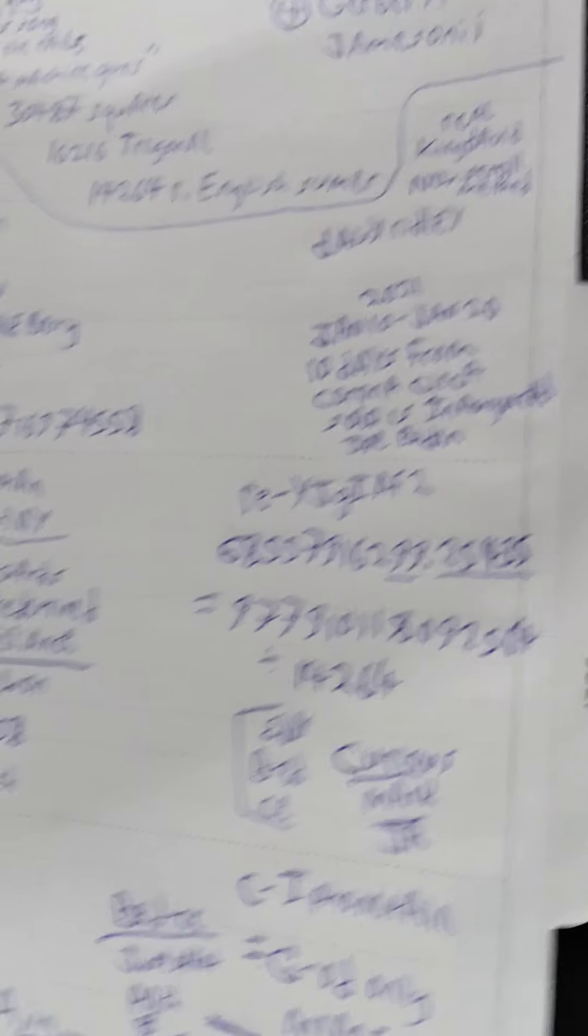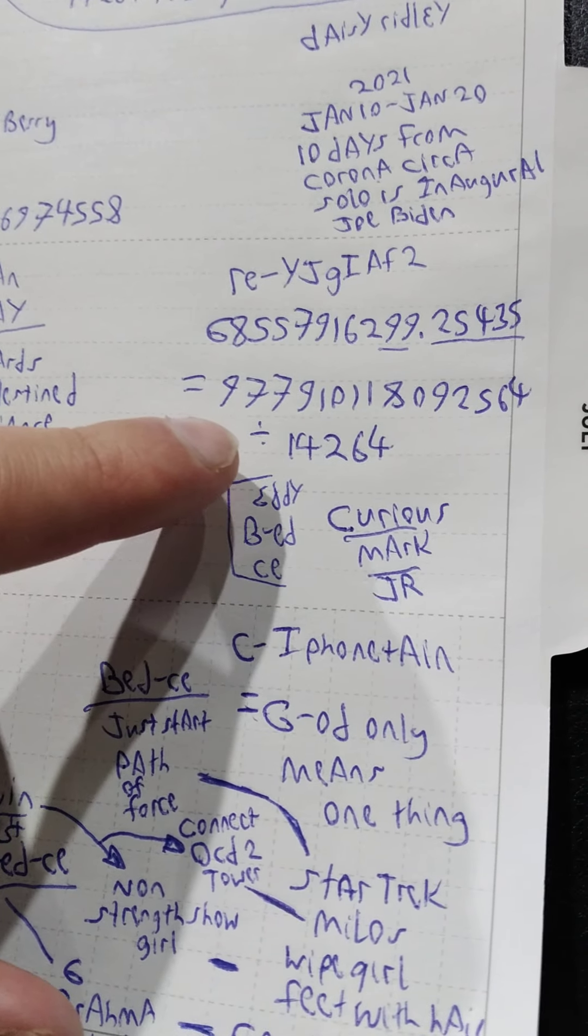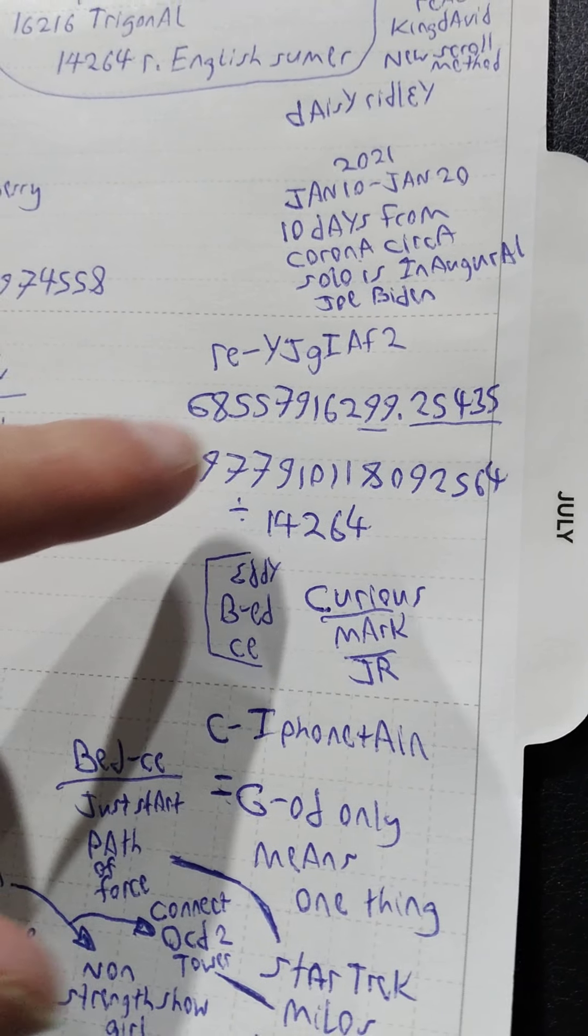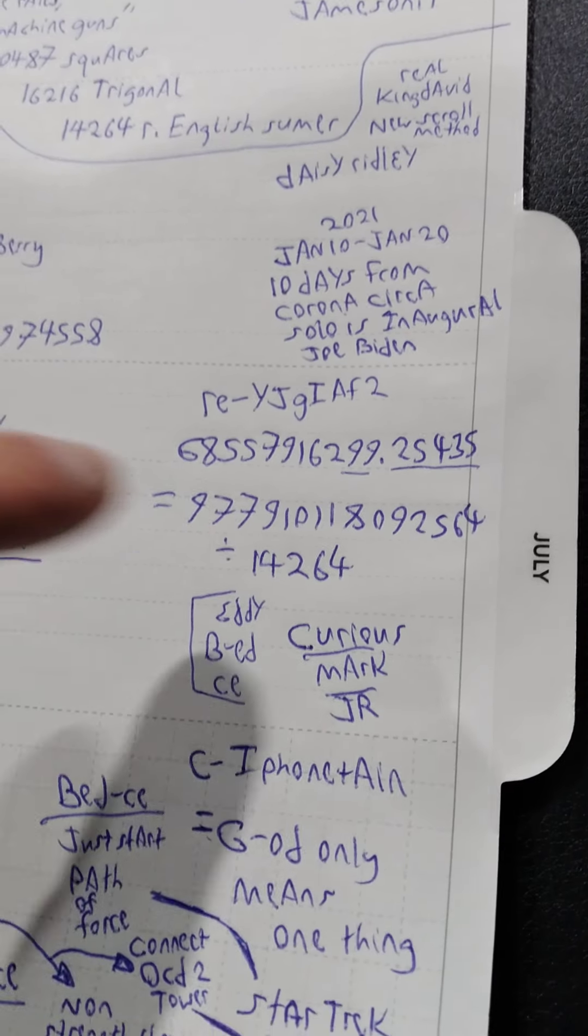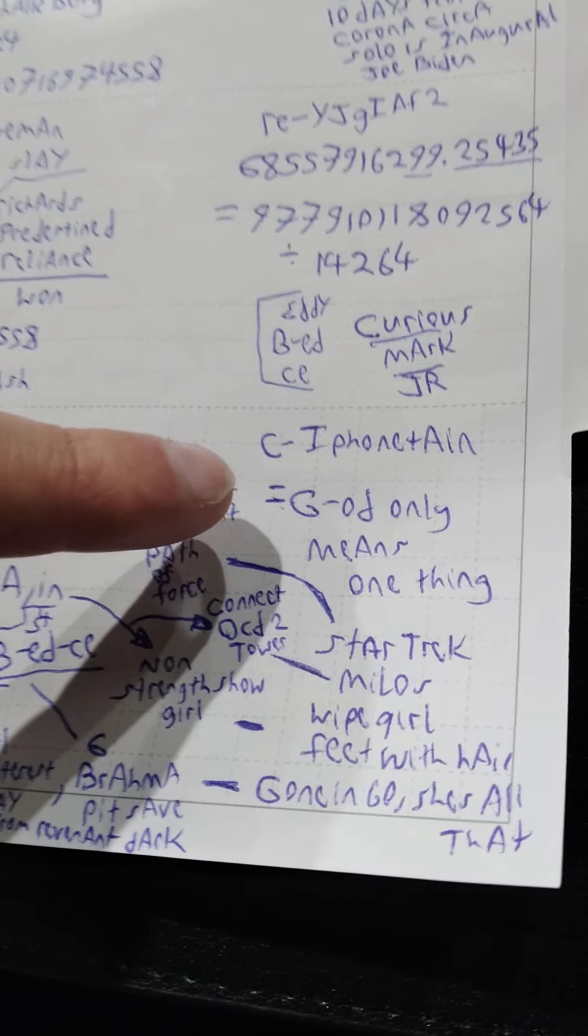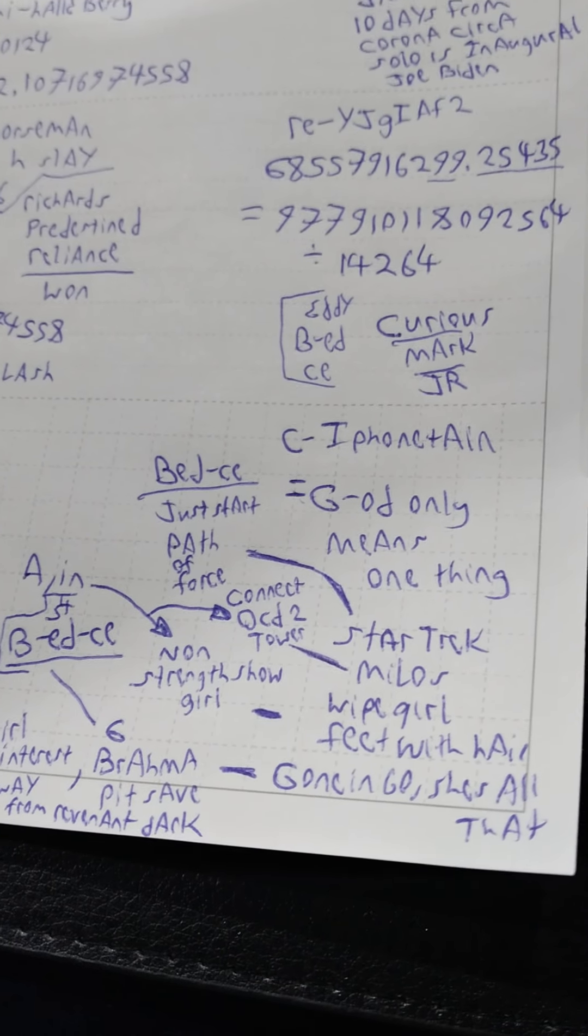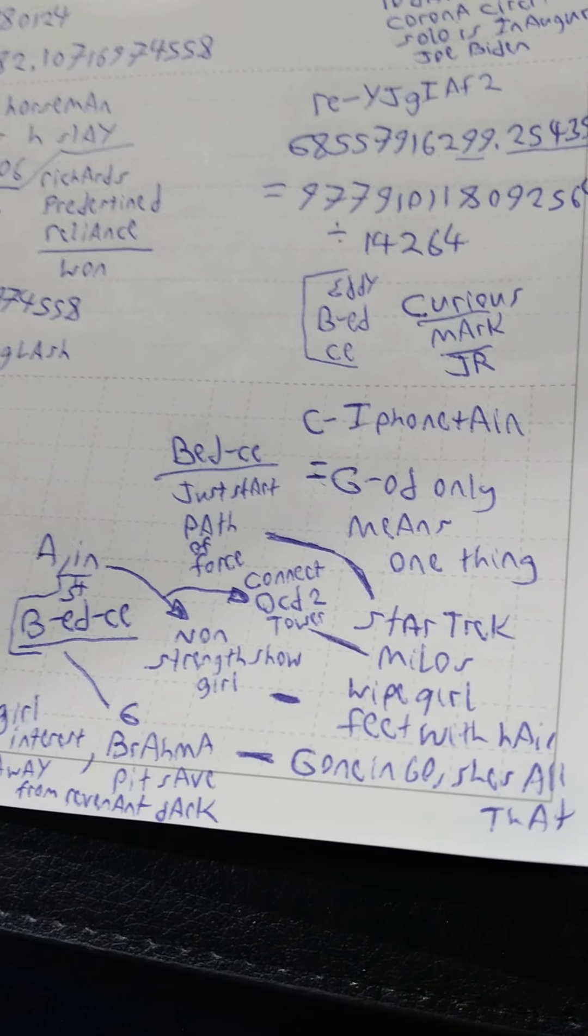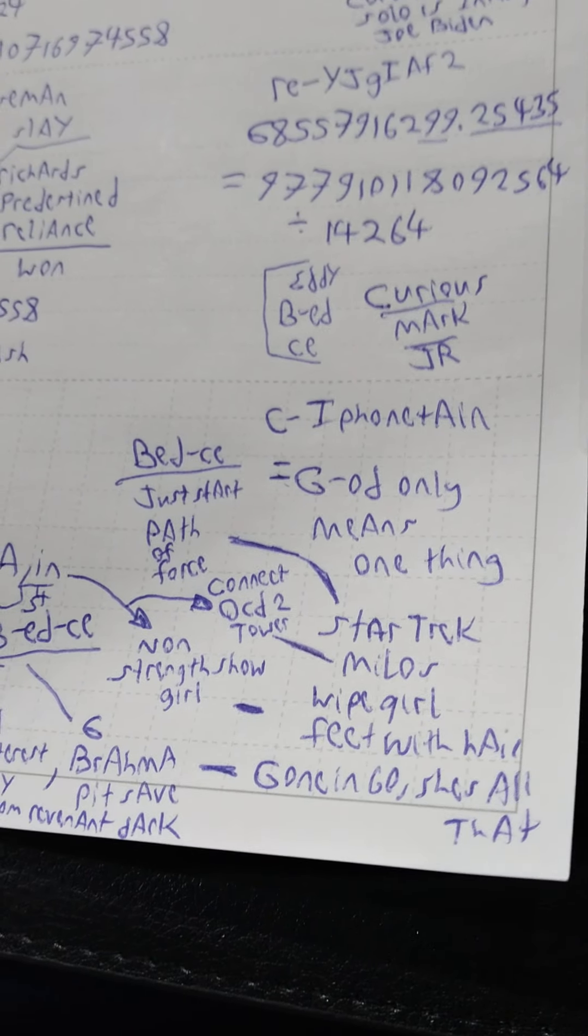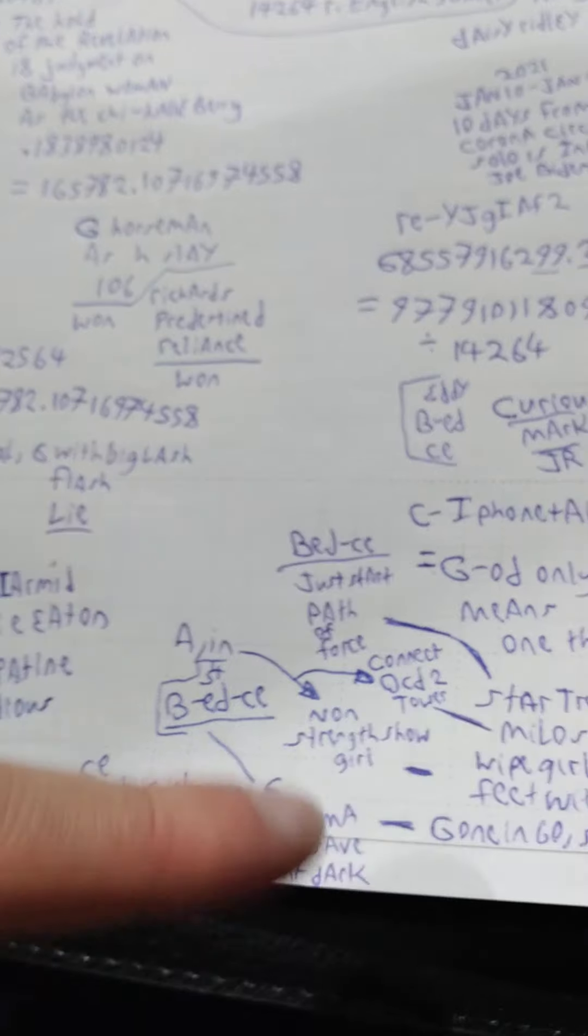So this nine, so take off the decimal and just go divided by 14264 and you get this here. So I actually, I read it and then I was like, let's go from the right side, like do the decimal first and like, because I think this II lines up. So you get C iPhone Italian, which when I was at the country club, I actually, this is a long time ago, I had a call and that's when my girlfriend was saying, God only means one thing, and I was saying it means both or whatever. But when you break all this down from the one, then you get the star Trek, the Milos, the white girl feet with hair, the gone in 60 seconds. And she's all that, which we've gone over. It's a whole creature that we've gone over.